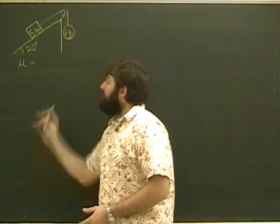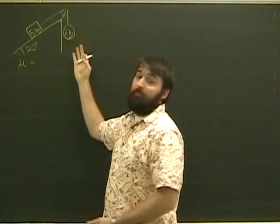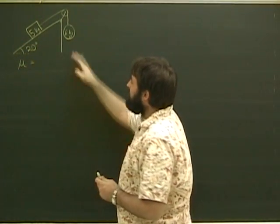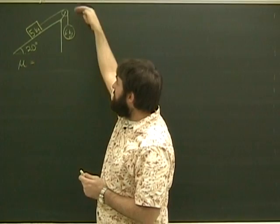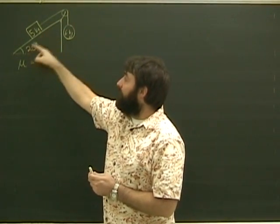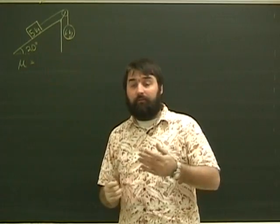Now we're going to combine the ramp problem with the pulley problem. Here we have a ramp attached to a pulley. There's a six kilogram object hanging vertically from a pulley, and the line connects it to a five kilogram object on a ramp, which is inclined 20 degrees to the horizontal.